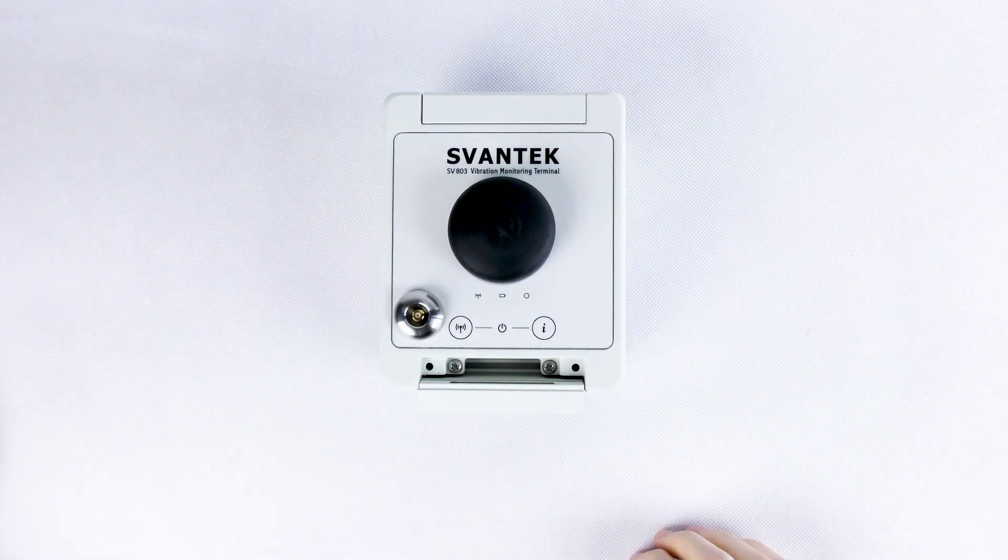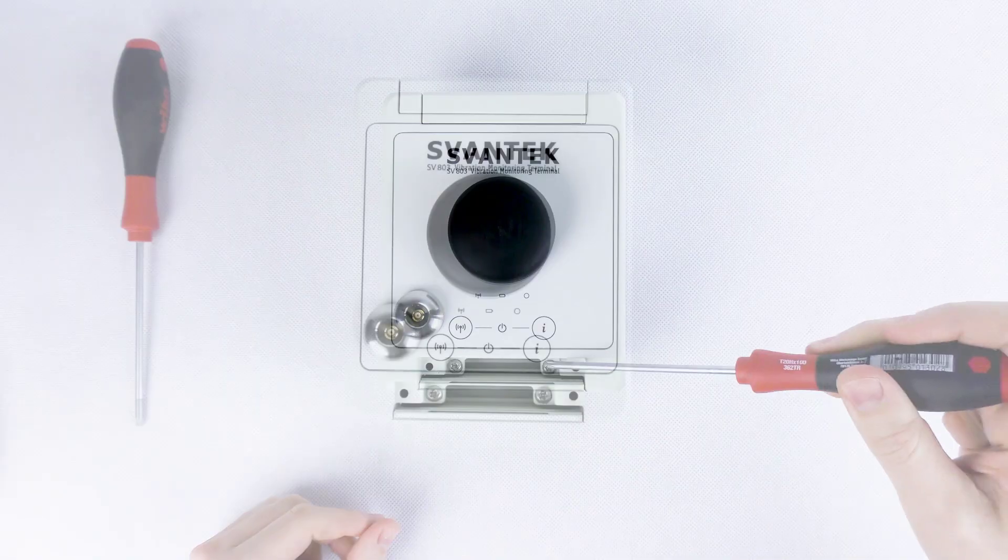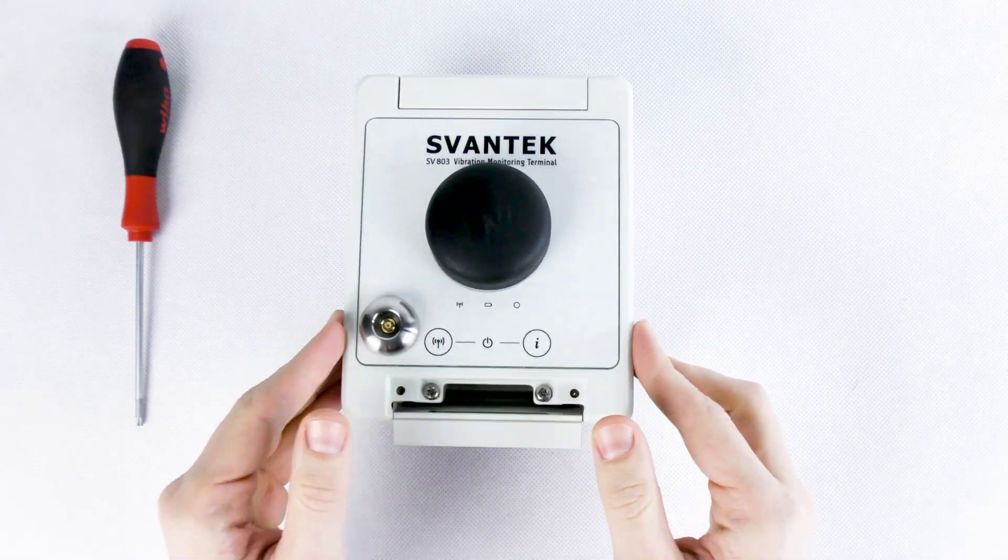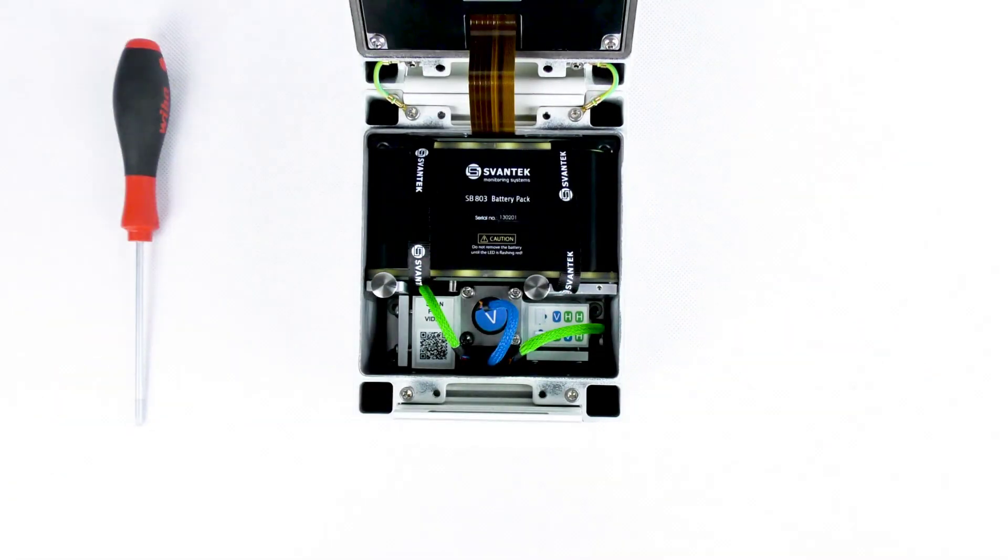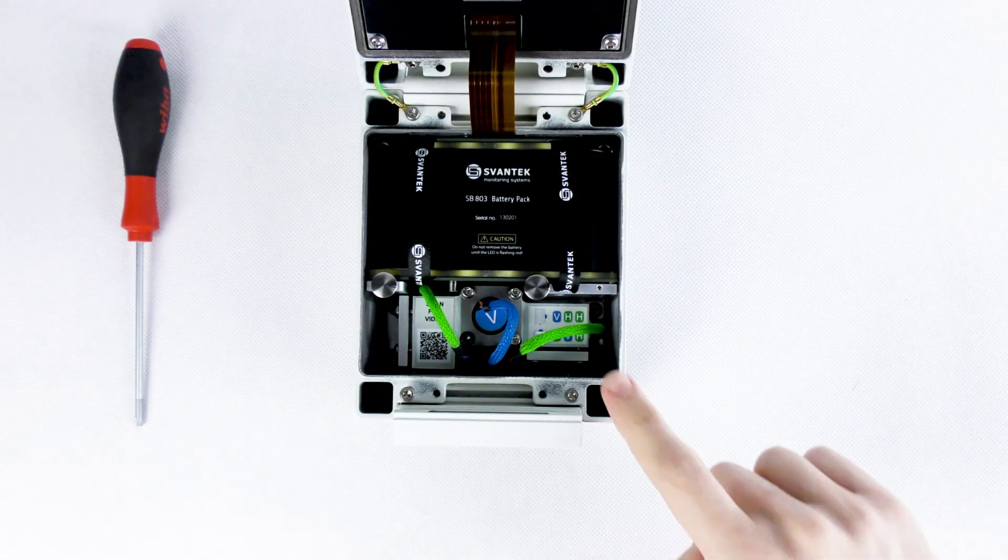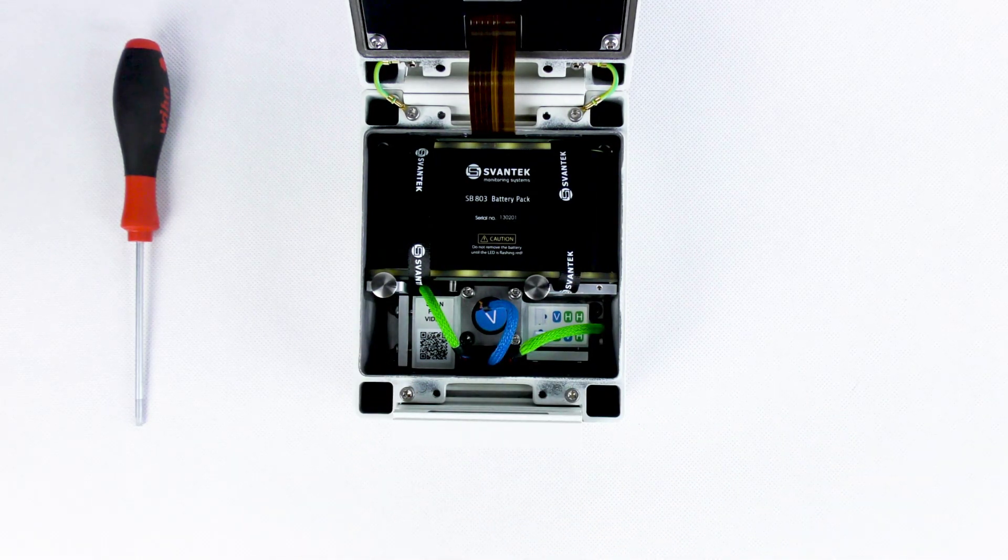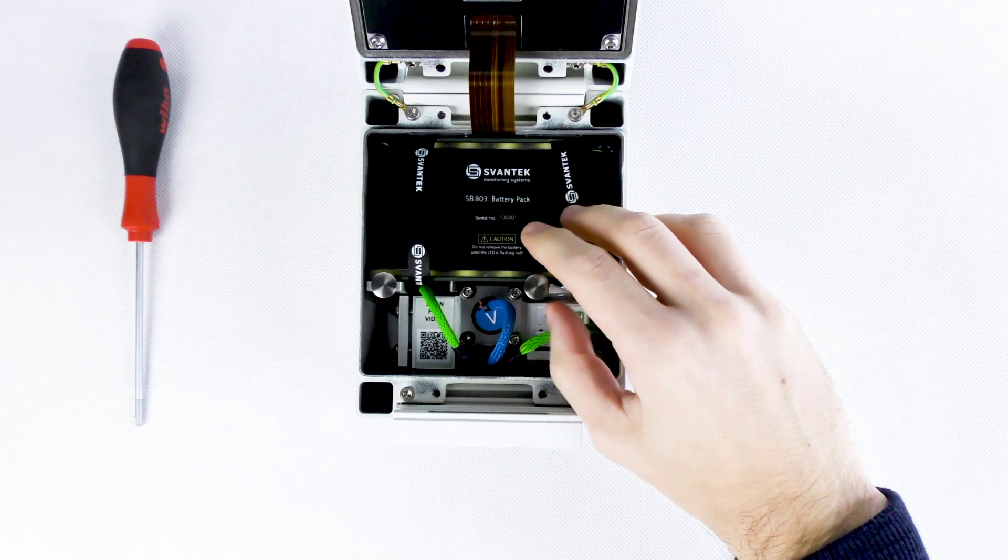Firstly, start by opening the protection cover and unscrewing the two main locking screws. When you open the wireless vibration monitor, you'll notice two protection pins that keep the battery pack from moving. Unscrew both of them to release the battery pack.